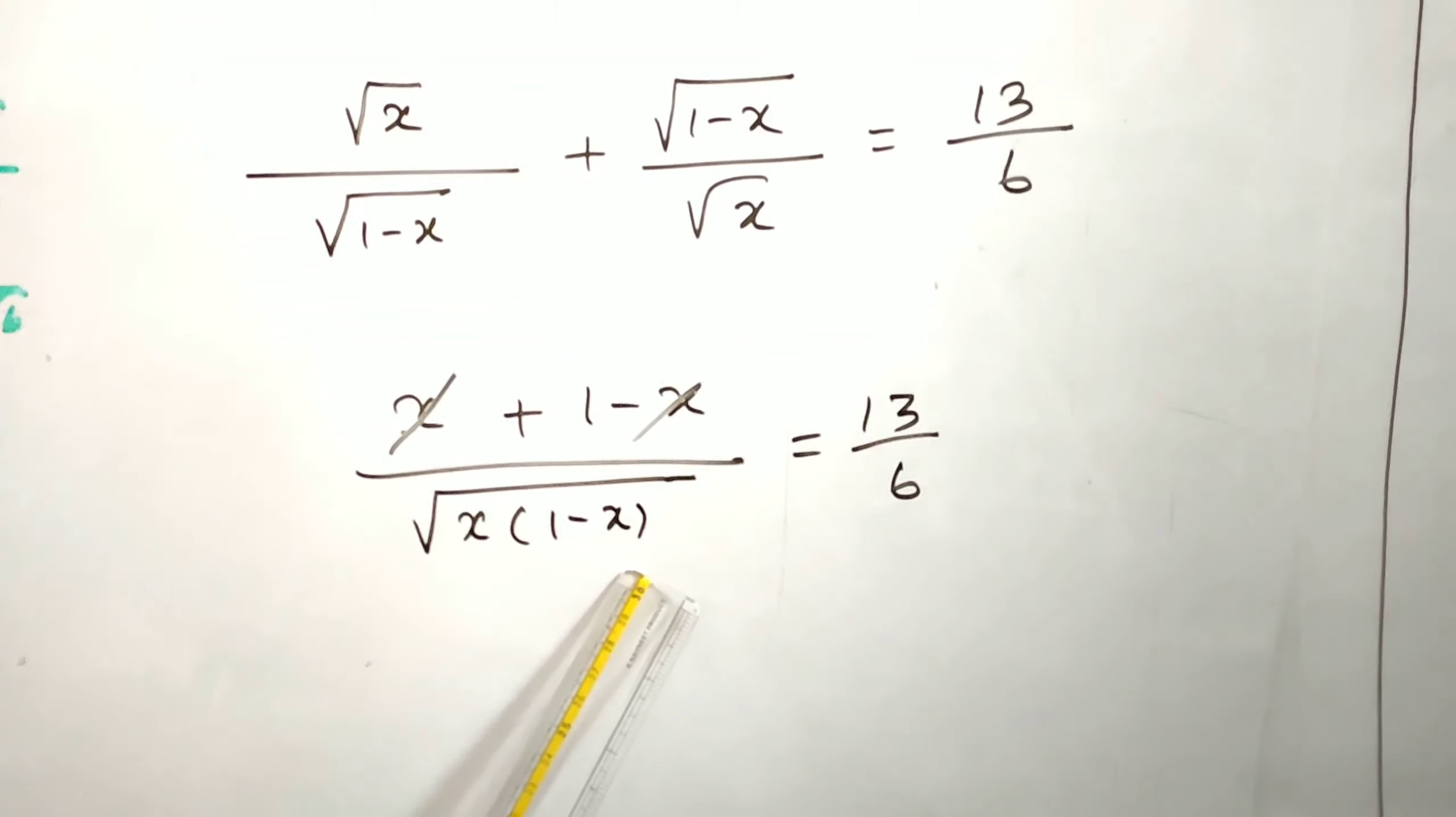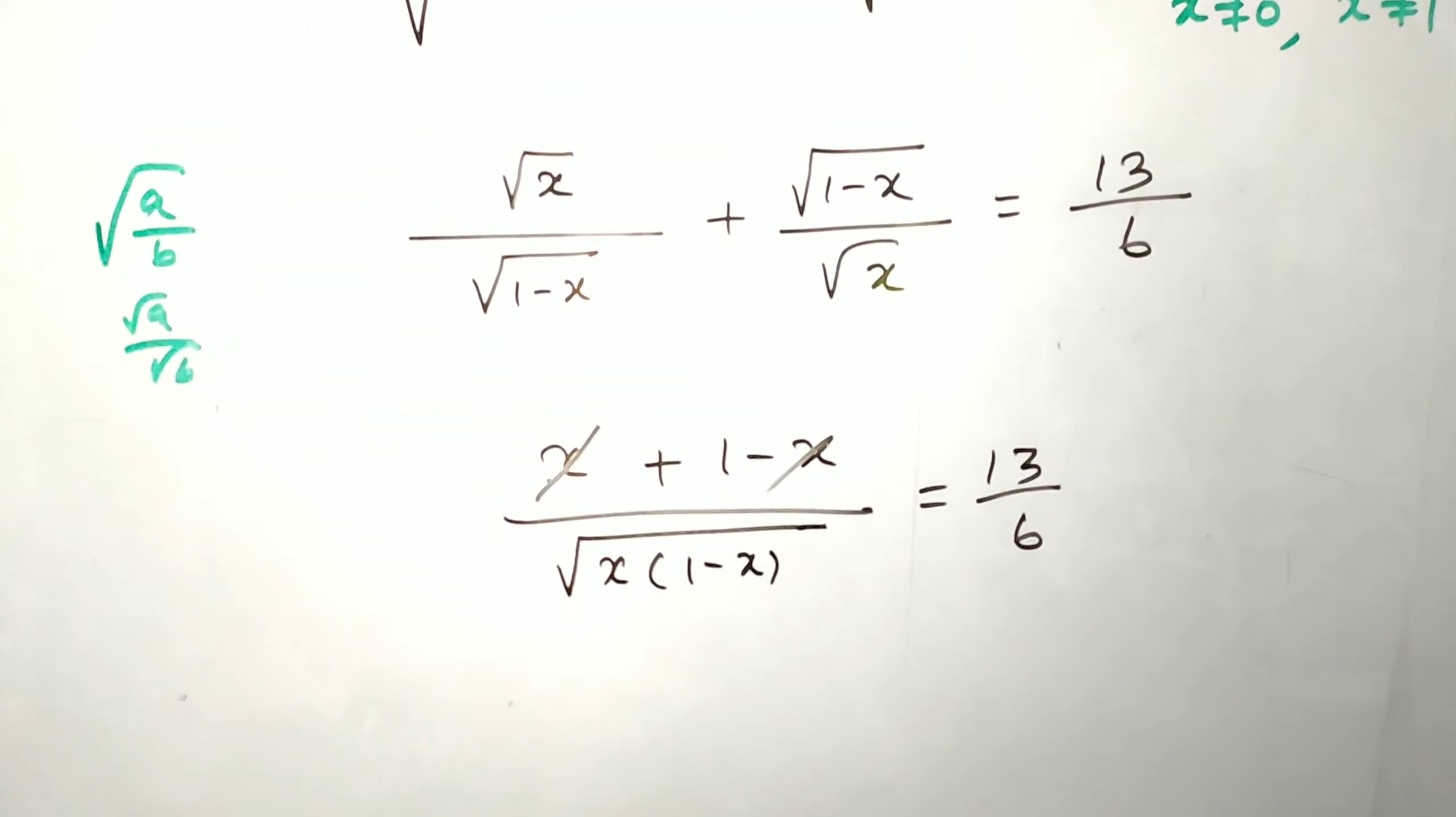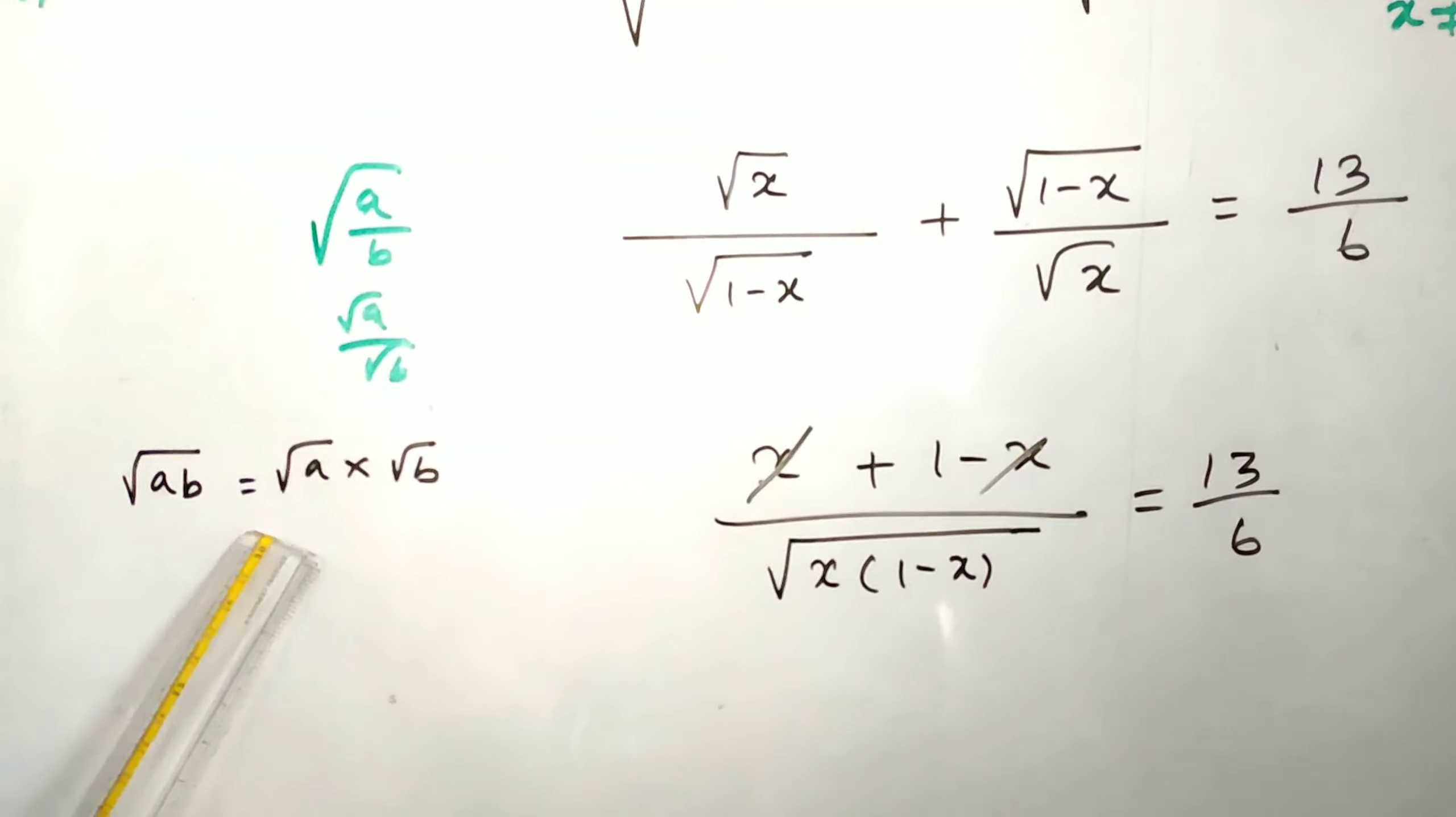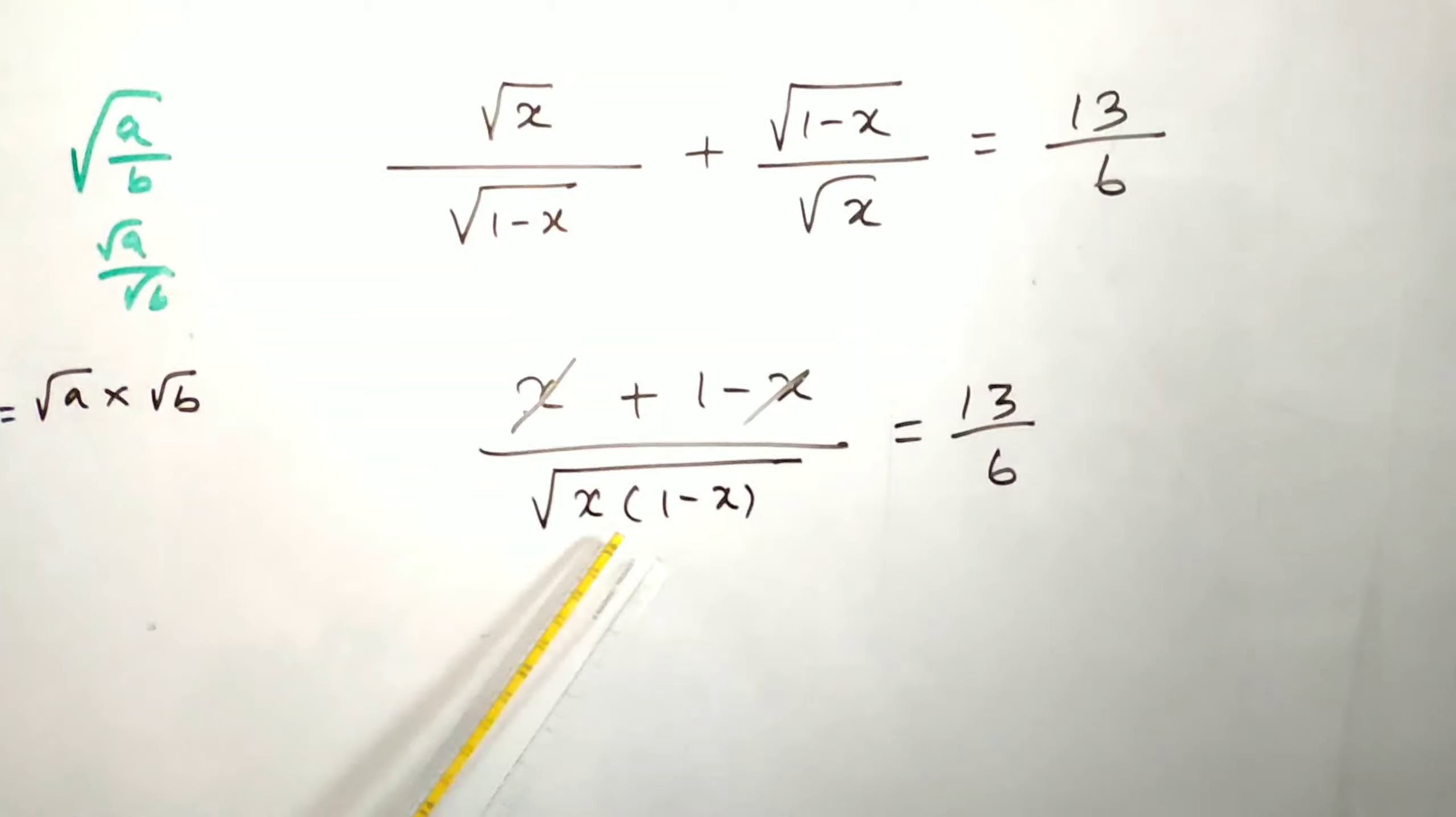Root a times root b means root of ab, so root a times root b means you can write it as root ab.